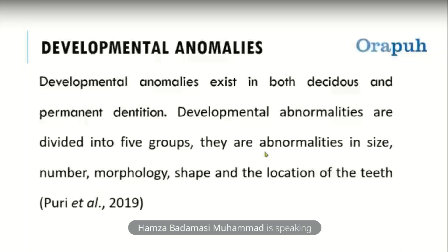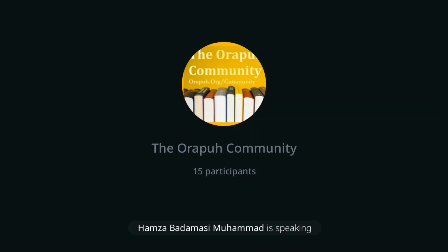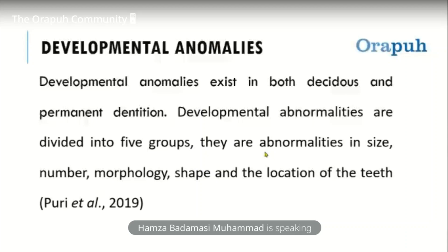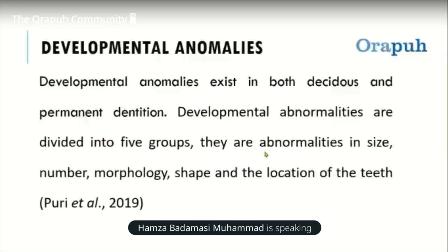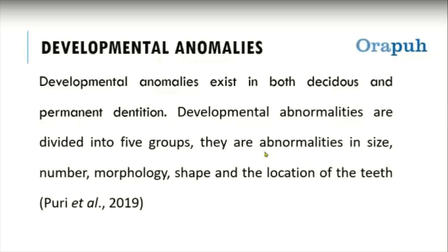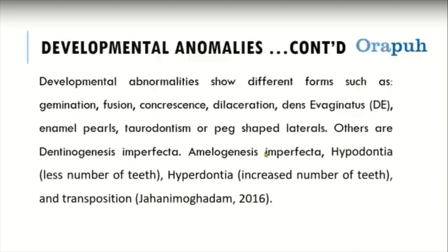Developmental anomalies exist in both deciduous and permanent dentition — you can find abnormalities in the children's dentition or in the adult dentition. These abnormalities are divided into five groups: abnormalities in size, abnormalities in number such as supernumerary teeth, abnormalities in morphology, abnormalities in shape or structure, and abnormalities in the location of the teeth within the oral cavity.